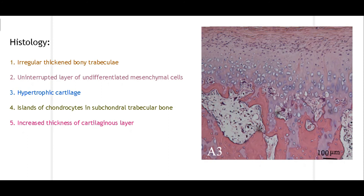When looking at the histology of a patient with condylar hyperplasia, there is irregular thickening of bony trabeculae, visible histologically. The mesenchyme layer thickens and broadens as seen in histological slides. There is hypertrophic cartilage as the entire condyle enlarges, with all layers increasing in size. There are also islands of chondrocytes within subchondral trabecular bone. Lastly, there is increased thickness of the cartilaginous layer. These are the key histological features of condylar hyperplasia.